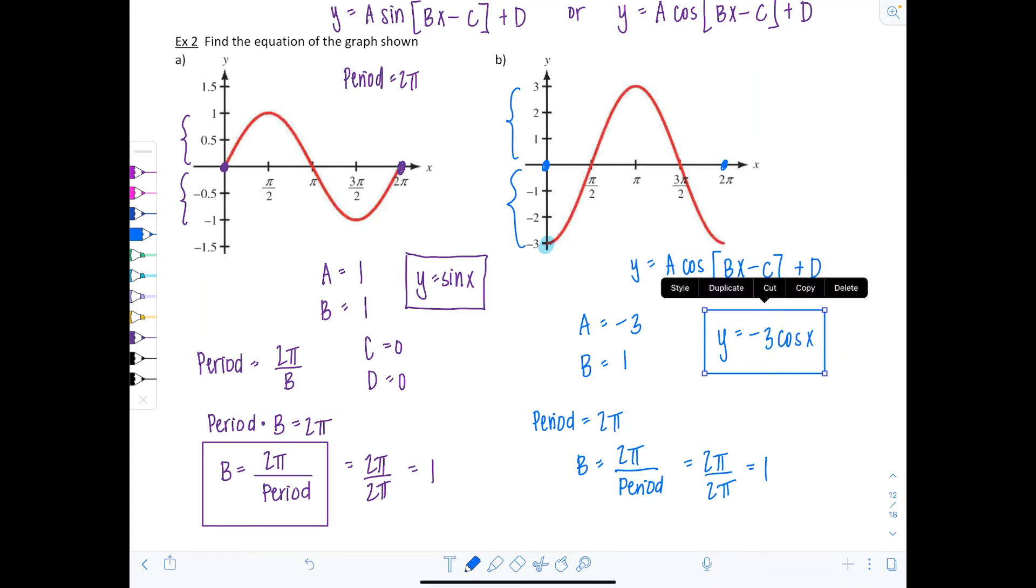Now I did mention earlier that you could write this or represent this graph using sine, but you would have to include a phase shift. So notice here, if I thought of it as sine, it would be shifted pi over 2 to the right. Because sine does start at zero, it starts its cycle at zero, when x is zero.